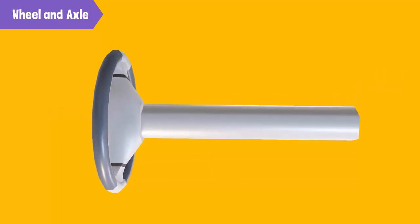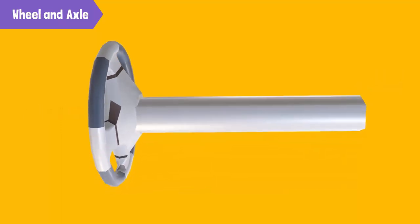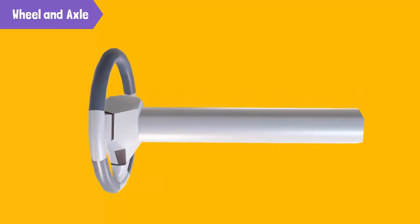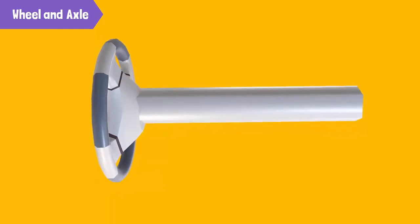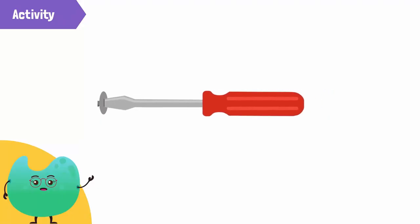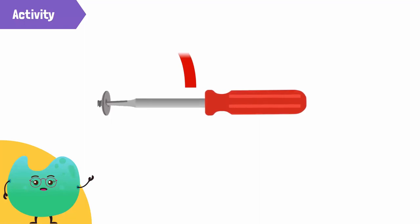Moving the wheel results in movement of the axle and vice versa. Before we learn about the wheel and axle, let's perform a simple experiment. Take a screwdriver and try to open a screw by turning its shaft. Is it working?